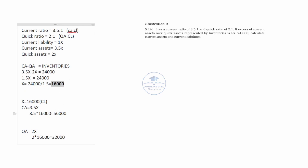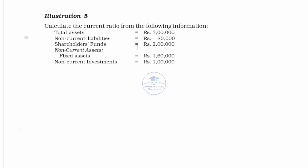We will now move to Illustration 5: Calculate the current ratio from the following information given in the balance sheet. The amounts given are total assets, non-current liabilities, shareholders fund, non-current assets, fixed assets, and non-current investments.